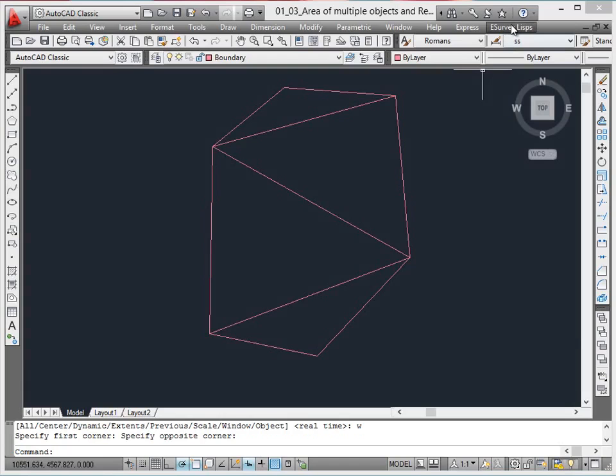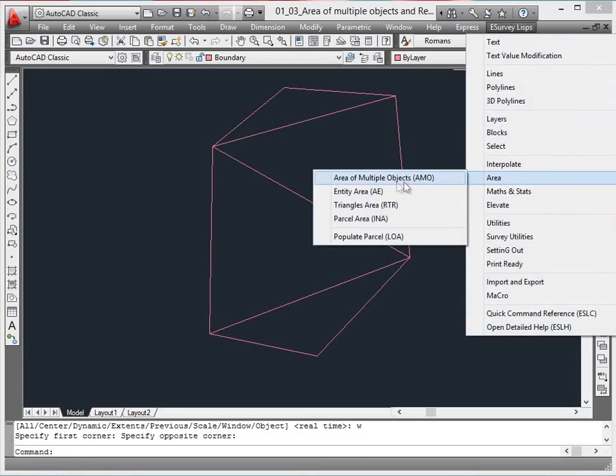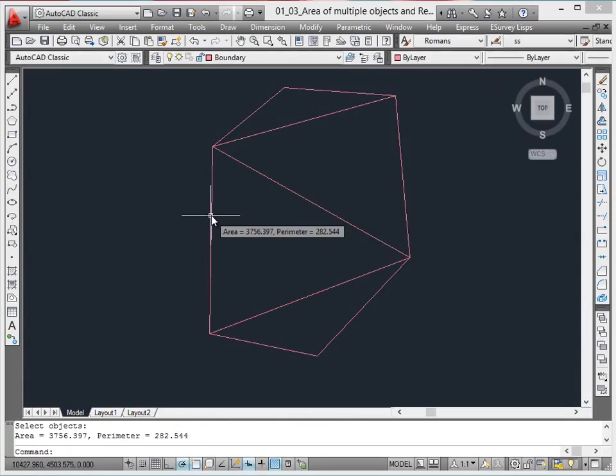Entity area. The AE command is a macro for area entity option, which is regularly used in survey drawings.